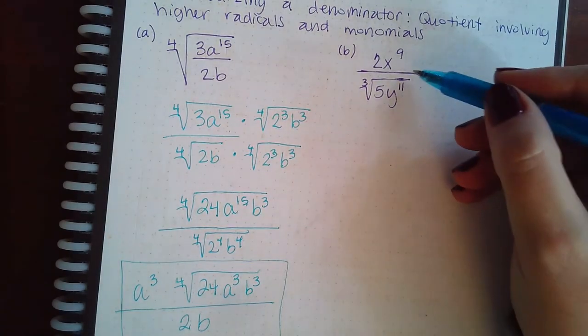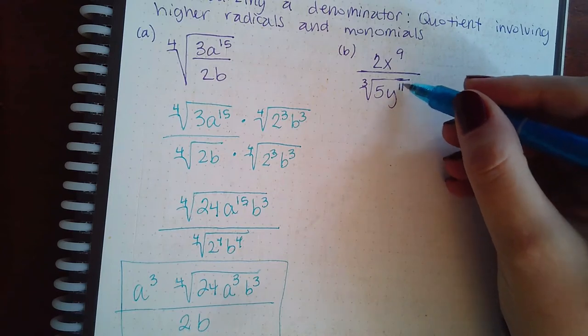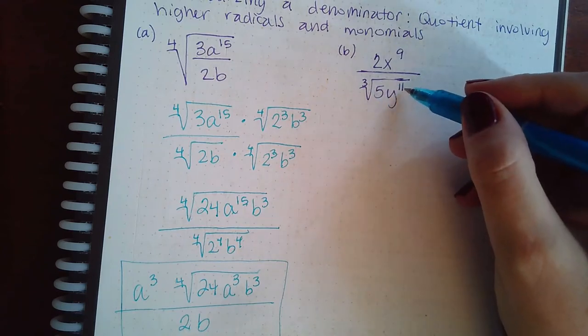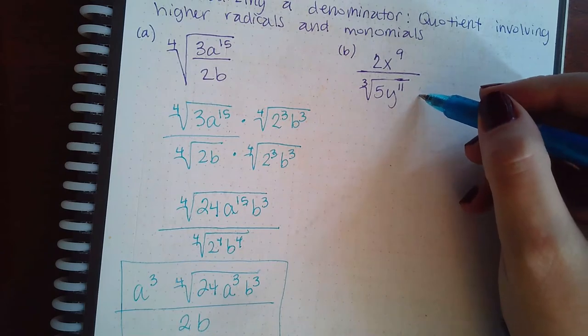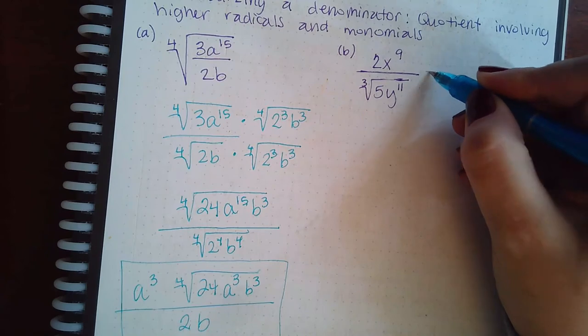So here we have a cube. We have enough to come out in the denominator. So in order for me to decide how many more I need, I'm actually going to have to simplify this first. So this one's a little bit different than the previous one.